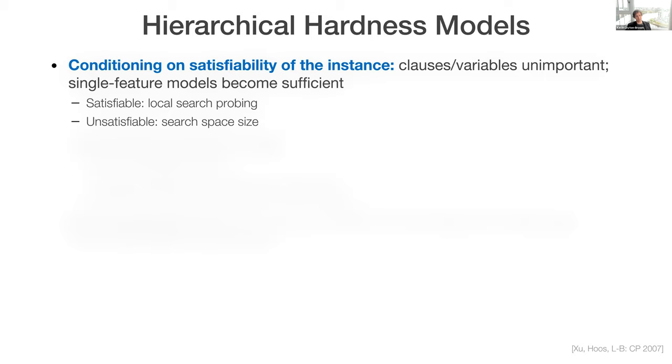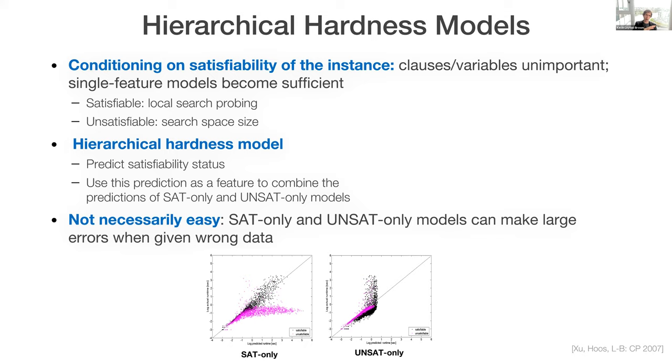So of course, we don't know the satisfiability status of an instance. If we did, we wouldn't presumably want to run a SAT solver in the first place. But this is still kind of an interesting insight maybe into how these models are working and why these two families of features turned out to be so important in our fixed variable models. So then we had a kind of audacious idea that maybe only machine learning oriented people could have. We wondered, could we build a kind of hierarchical model that would begin by predicting satisfiability status, and then it would condition on this prediction as a feature to combine the predictions of the SAT-only and unsat-only models that we had just seen worked well. Let me point out that this would not necessarily be an easy thing to do, because if we could make these predictions really accurately, we would do well. But these SAT-only and unsat-only models do egregiously badly when they're given the wrong input. So if these predictions ever went wrong, our models could potentially be terrible.